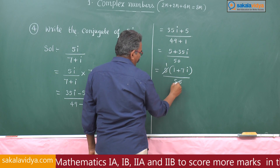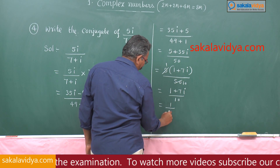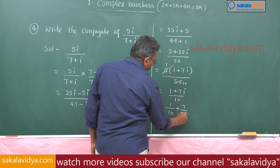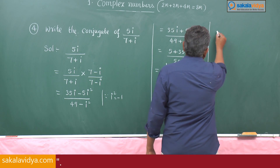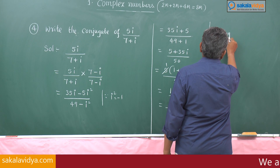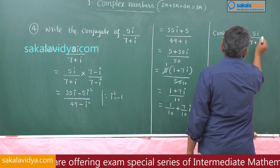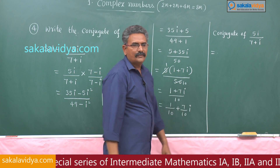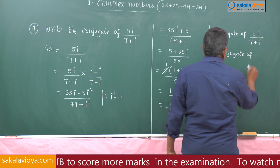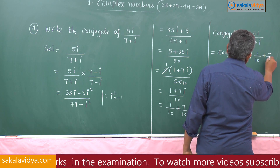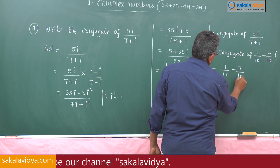This simplifies to (1 + 7i)/10, which is 1/10 + (7/10)i — it is in the form a + bi. Now, the conjugate of 5i/(7+i) equals the conjugate of [1/10 + (7/10)i], which equals 1/10 - (7/10)i.